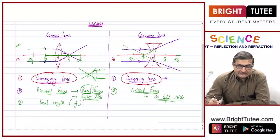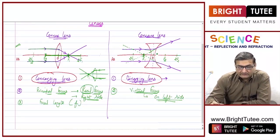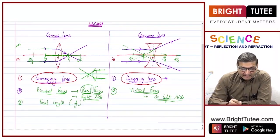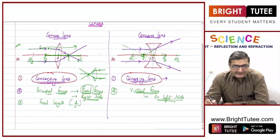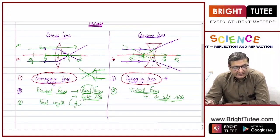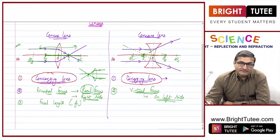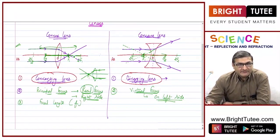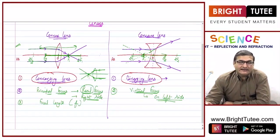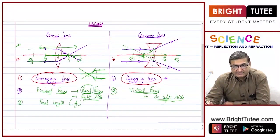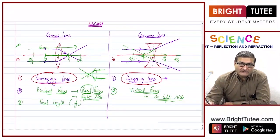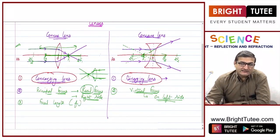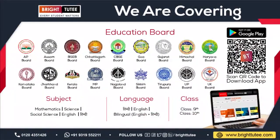When talking about left side or right side, distances are measured from the optical center. These are the key differences between convex and concave lenses. Having studied how these two lenses converge or diverge light and the kind of focus they form, we will next study in detail the type of images formed by each lens — where to place the object, where the image will be formed, the nature, size, and type of images.